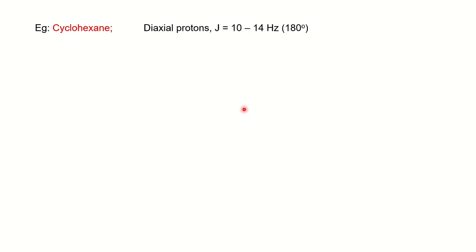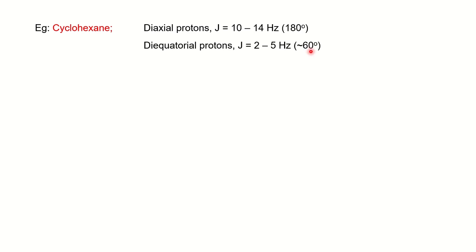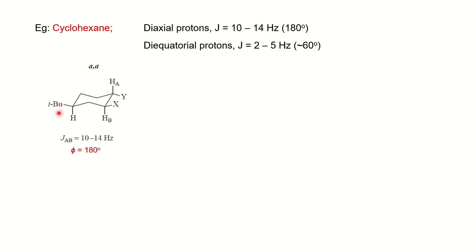Now we take the example of cyclohexane. Two protons at the diaxial position have a coupling constant of 10 to 14 Hz, corresponding to a dihedral angle of 180°. Two protons at the diequatorial position show a coupling constant of 2 to 5 Hz, corresponding to approximately 60°. In this cyclohexane example, a bulky tertiary butyl group is present, which restricts the rotation of the cyclohexane ring.